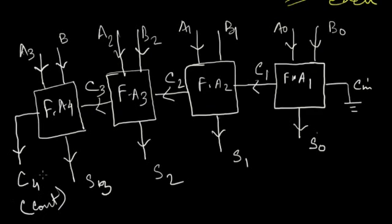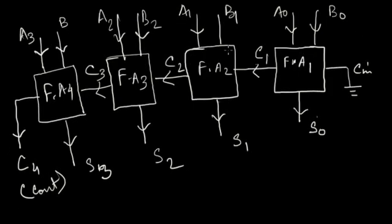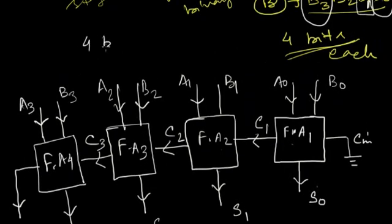The final carry output C4, also referred to as C-out, represents the final carry out from all stages of addition. By cascading full adders this way, we can add multi-bit binary numbers, where each full adder stage adds the corresponding binary bits of the two numbers. The carry generated in each stage is transferred to the next stage. This is how we cascade full adders to create a four-bit parallel adder.